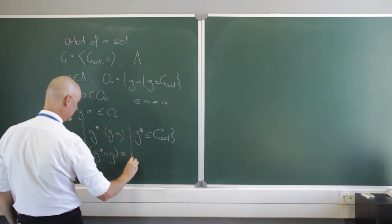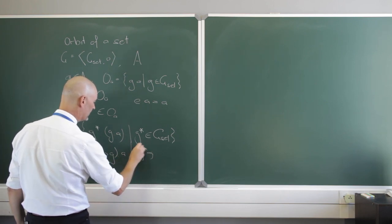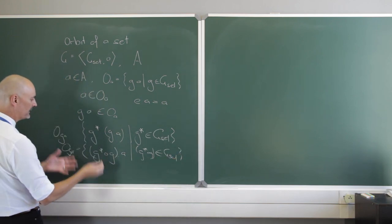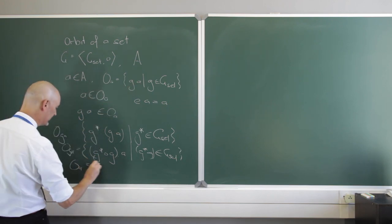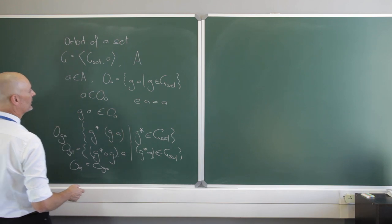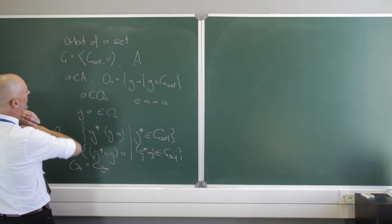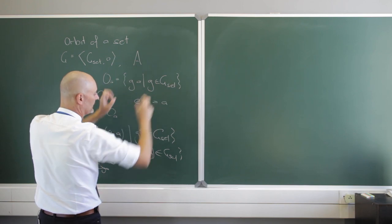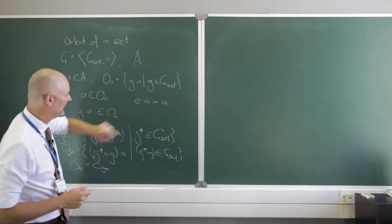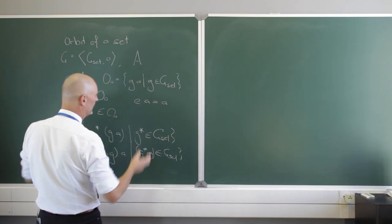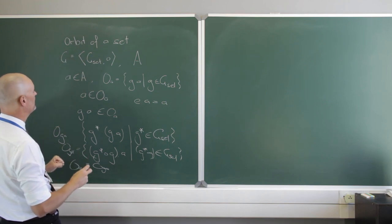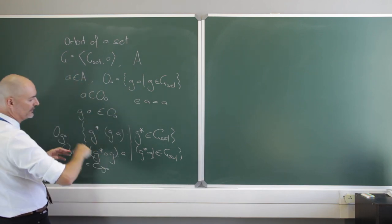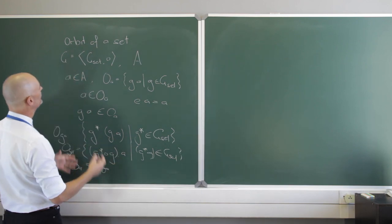So the orbit of G·a equals the set of all G*·a for G* in G-set, which is exactly the orbit of a. In other words, we can take any element from the orbit of a as a new starting point, let all elements of G act on it again, and we land up with exactly the same orbit.